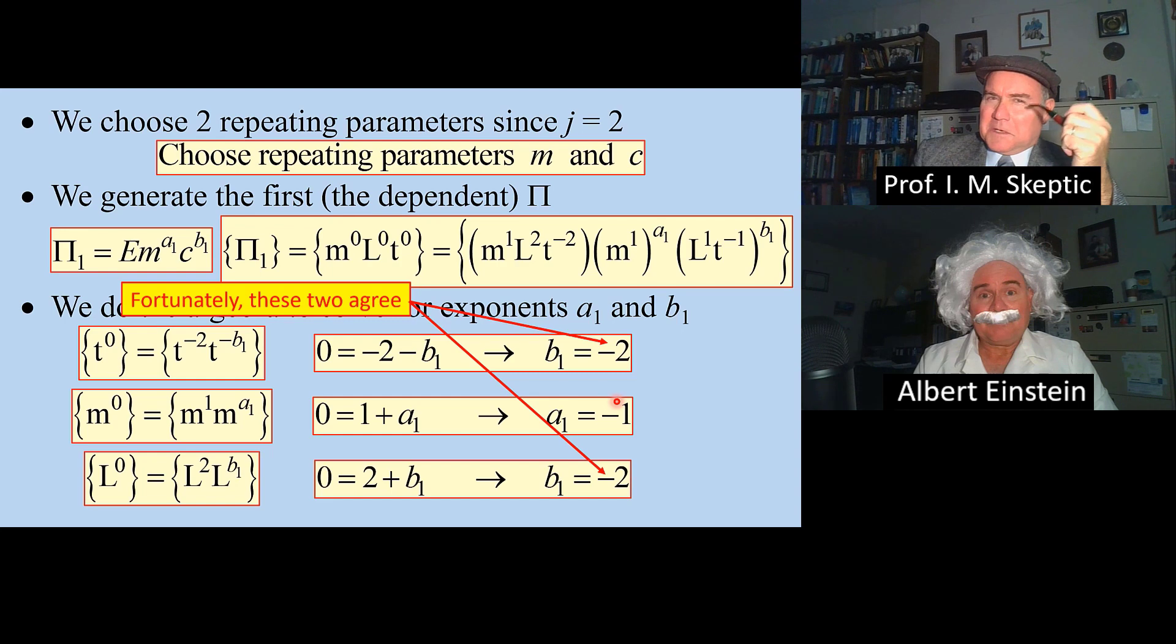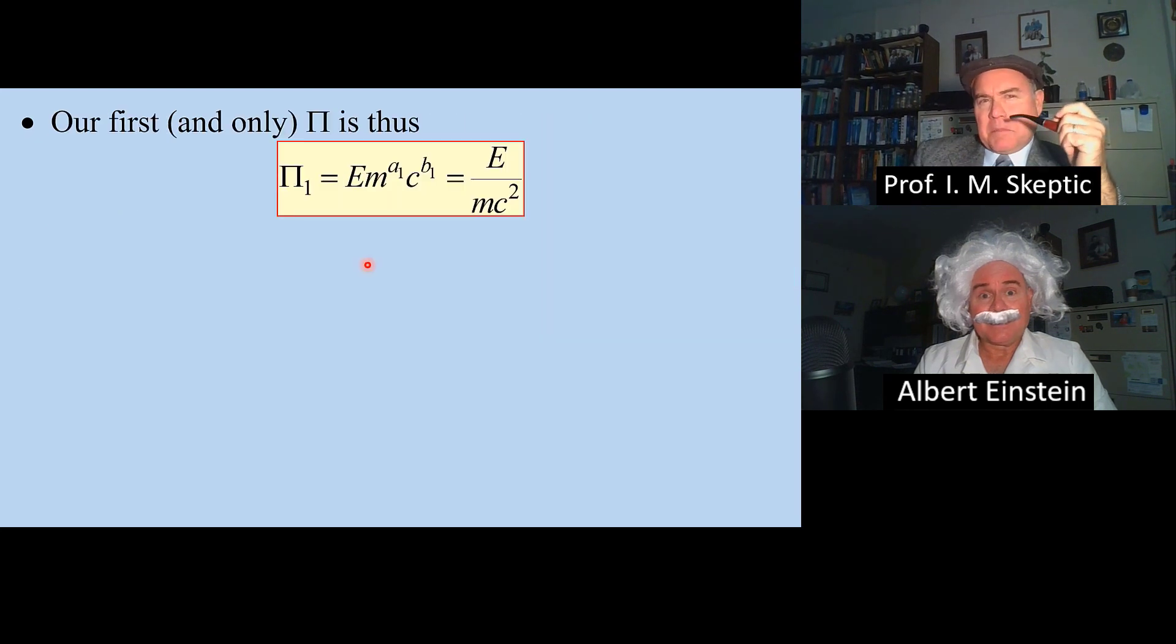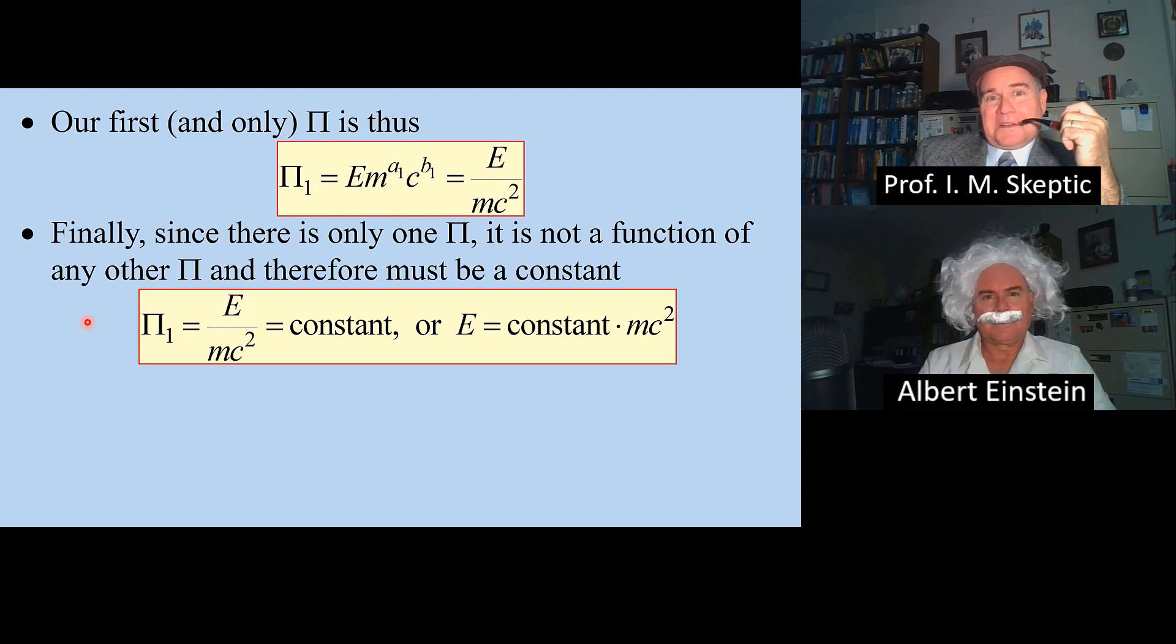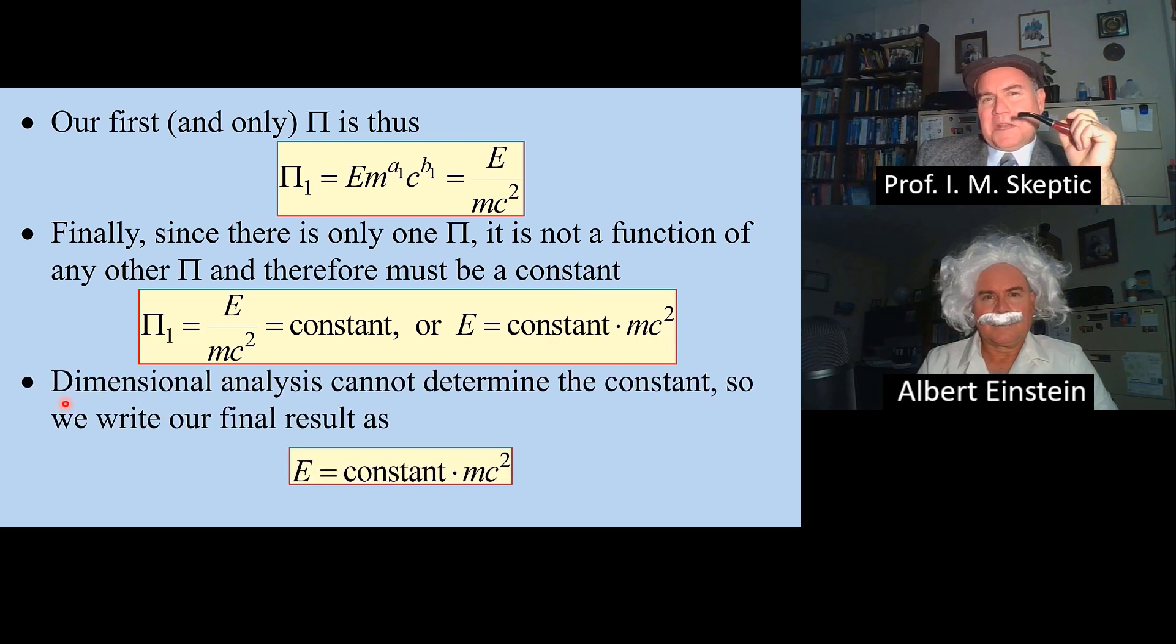Fortunately, these two agree, or we'd be in trouble. Our first and only pi is this: pi 1 is e over mc squared. But since there's only one pi, it can't be a function of anything else. So it must be a constant. Solving for e, e is some constant times mc squared. Dimensional analysis cannot determine the constant. So our final result is e equals constant times mc squared.